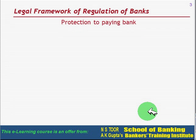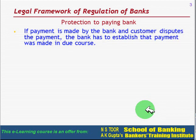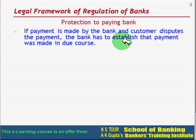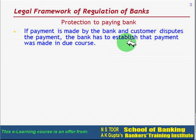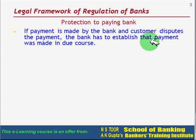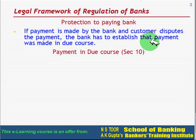What type of protection is available to the paying bank? If the bank makes a payment and the customer disputes that payment, then the bank has to establish that the payment was made in due course. The bank can protect itself only if it is able to prove that the payment was made in due course.